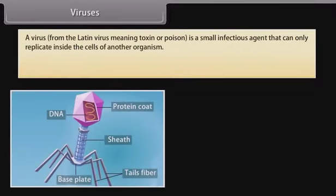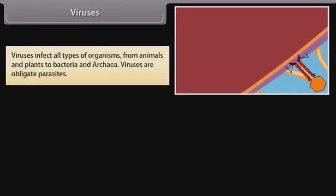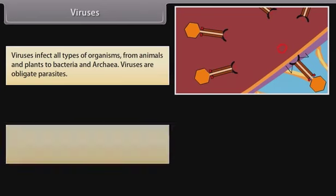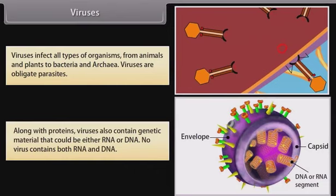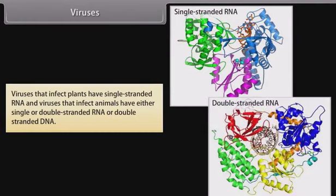A virus is a small infectious agent that can only replicate inside the cells of another organism. Viruses are non-cellular organisms characterized by having an inert crystalline structure outside the living cell. They infect all types of organisms, from animals and plants to bacteria and archaea. Viruses are obligate parasites. Along with proteins, viruses also contain genetic material that could be either RNA or DNA. No virus contains both RNA and DNA. Viruses that infect plants have single-stranded RNA, and viruses that infect animals have either single or double-stranded RNA, or double-stranded DNA.